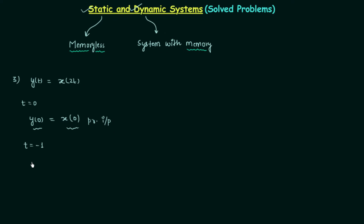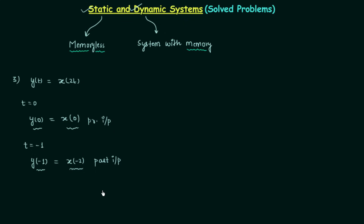Let's take t equal to minus 1. We will have y(−1) equal to x(−2). You can clearly see the present value of output is dependent on the past value of input. So the system output is dependent on past values of input, and thus the system is dynamic in nature.